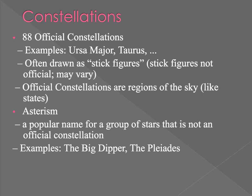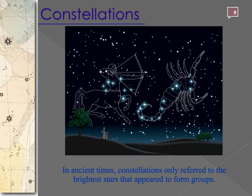There are 88 official constellations. A constellation is different from an asterism: a constellation delineates a specific region of the sky, while an asterism is just a popular name for a group of stars. For example, the Big Dipper is an asterism — the constellation name is Ursa Major, meaning 'the bear.' Here we can see Orion the Hunter, who is depicted hunting Scorpius.